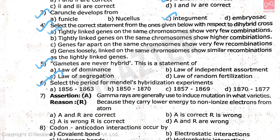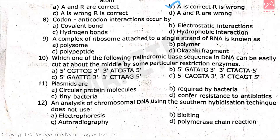Question number 7: assertion and reason method — the correct answer is option B. Question number 8: codon-anticodon interactions occur by — the correct answer is option C. Question number 9 and 10: a complex of ribosome attached to a single strand of RNA is known as — the correct answer is option A.